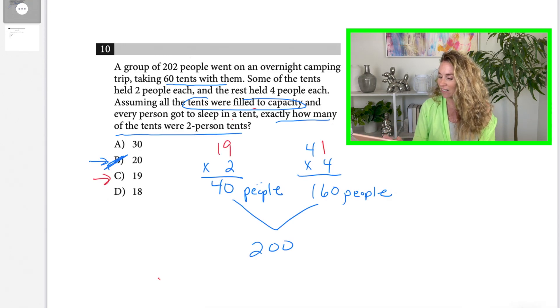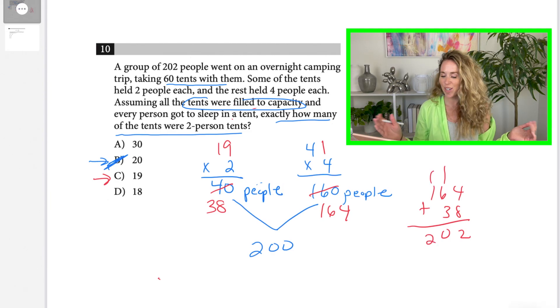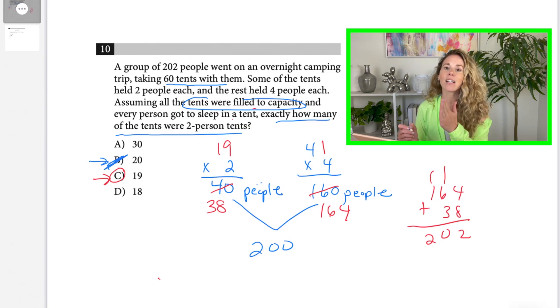And when I do 19 times 2, I get 38. When I do 41 times 4, I get 164. Well, let's see what happens when we add those together. We get 202. So that's how I know my answer is 19. So take the answer choices, use them to your advantage, plug them back into the problem, start with a middle number, and you won't go wrong.